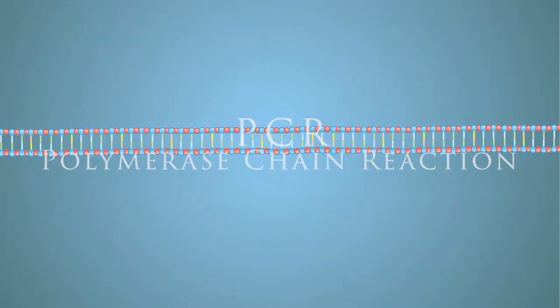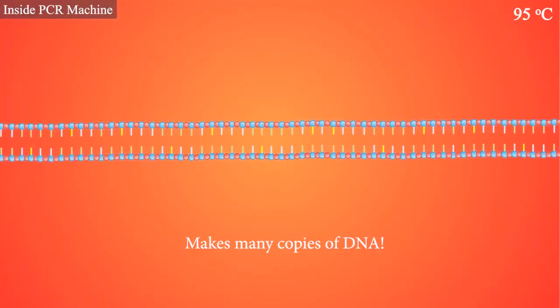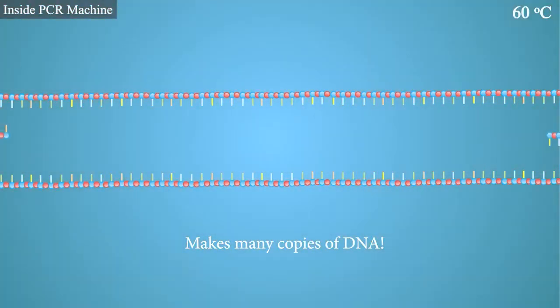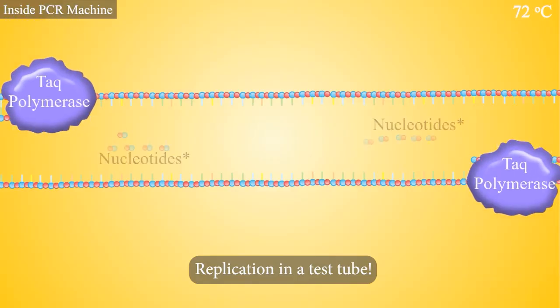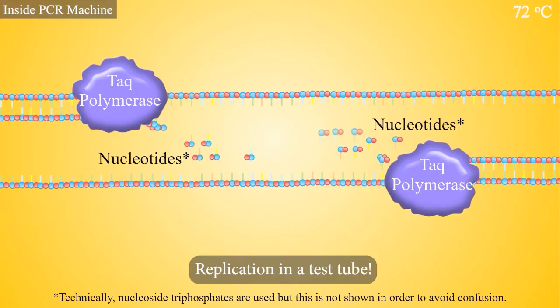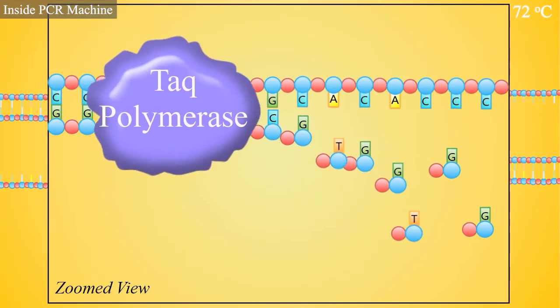PCR is an important biotechnology technique that allows us to make many copies of DNA. Essentially, PCR is DNA replication in a test tube, and it allows us to get sufficient DNA to determine which suspect was present at the crime scene.